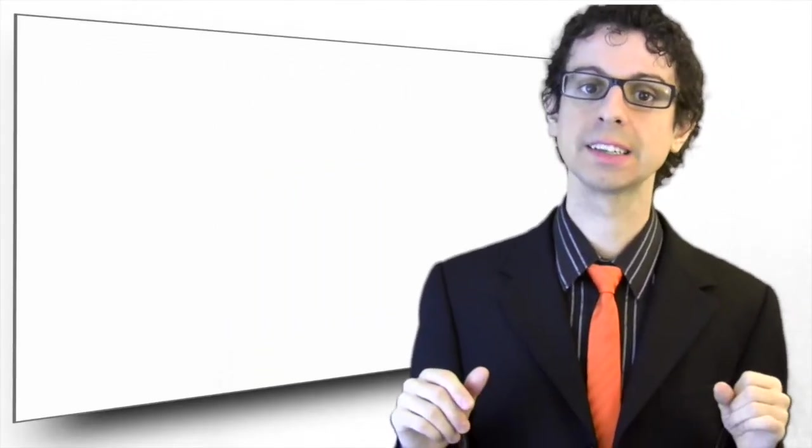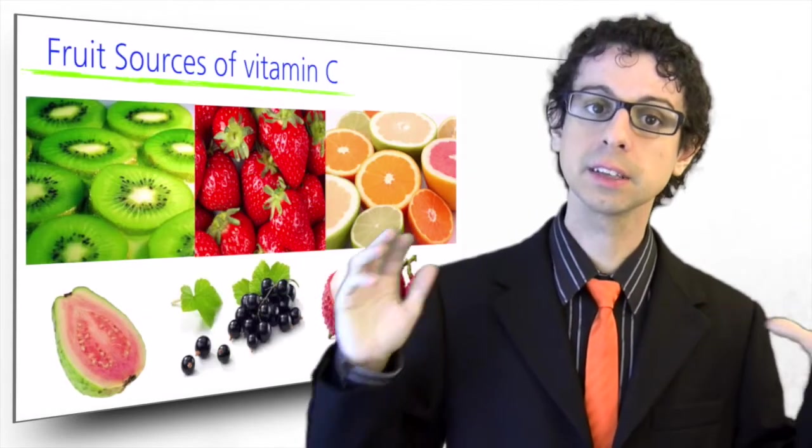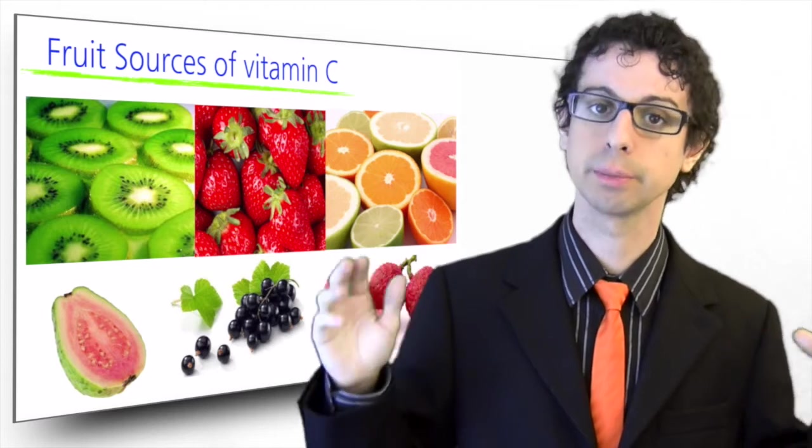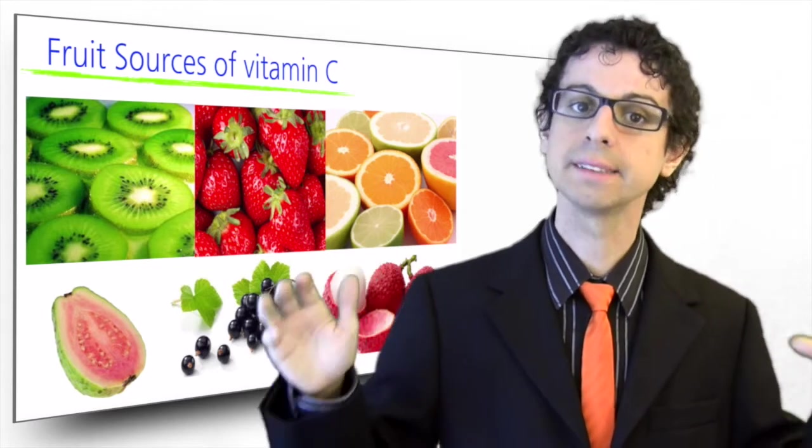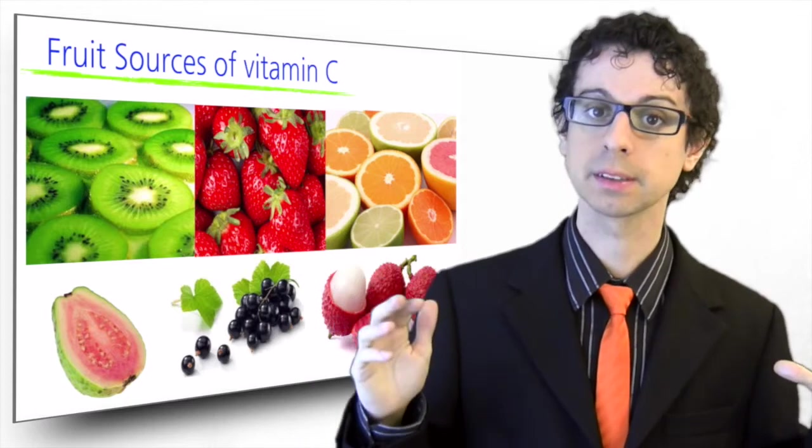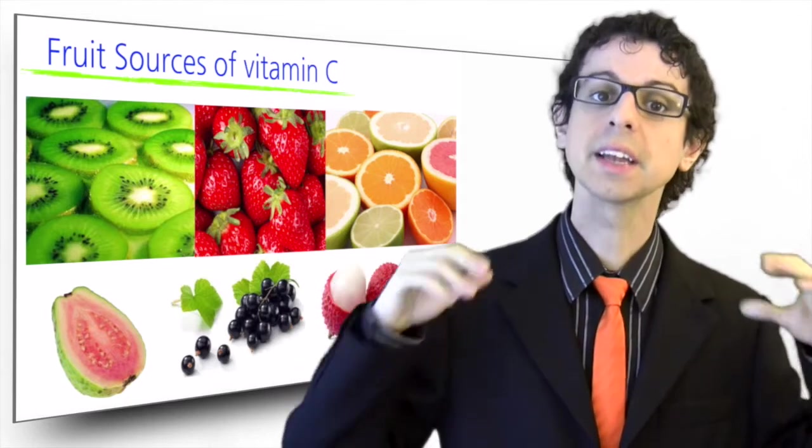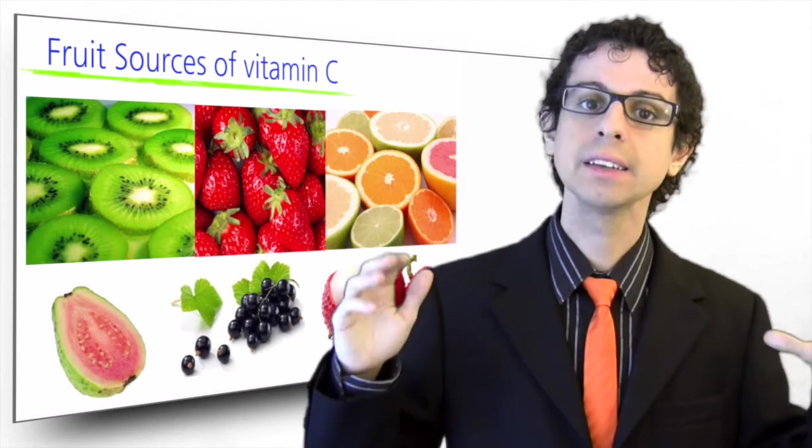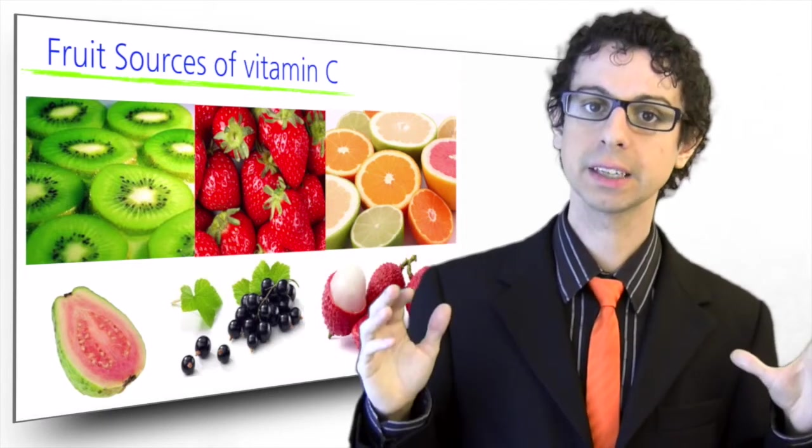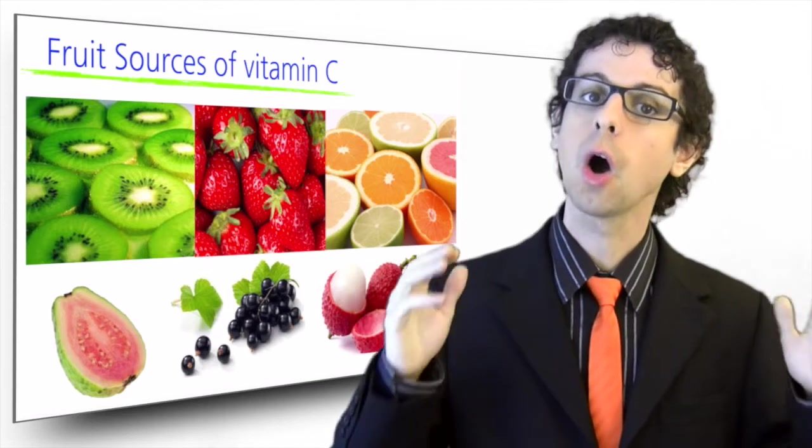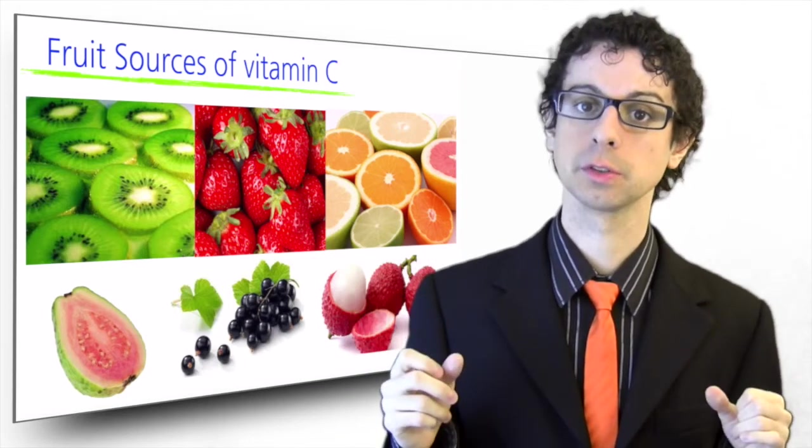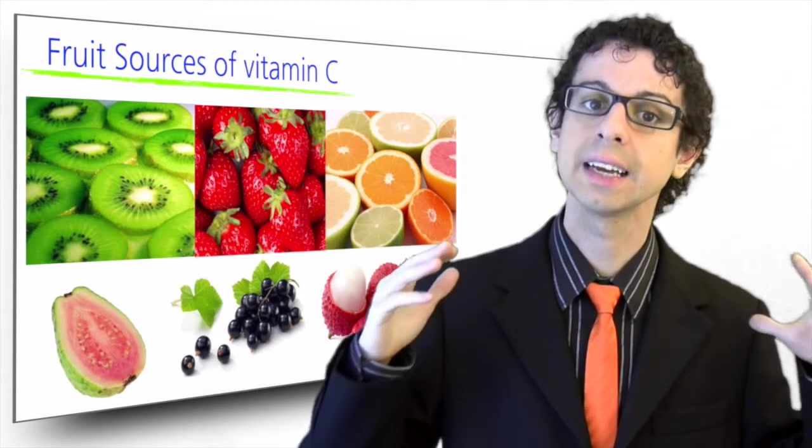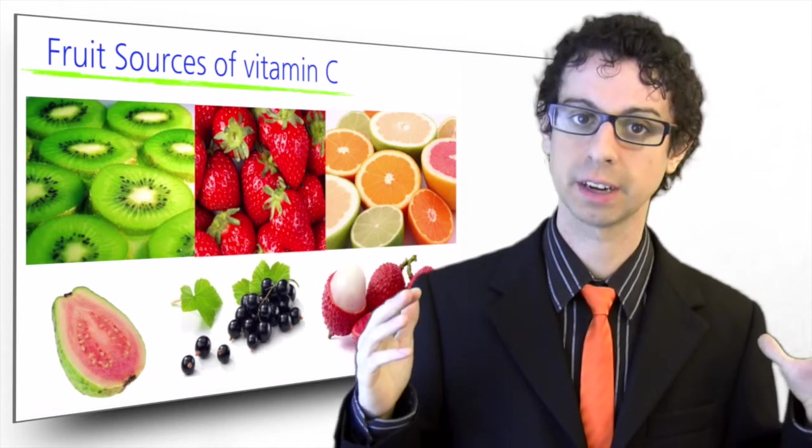So where do we find vitamin C in food? Everybody knows that citrus fruits are rich in vitamin C: oranges, lemons, grapefruit. Moreover, these fruits also contain some particular phenolic substances called flavonoids that enhance its biological activity. A middle-sized orange provides by itself the amount of vitamin C necessary to prevent scurvy. Orange juice is also a good source of vitamin C, but must be drunk immediately after squeezing the orange to prevent light and oxygen from damaging vitamin C.